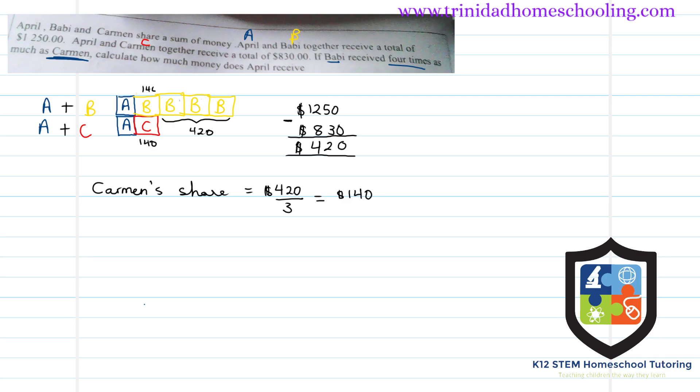You can see that here one of this is equal to Carmen's share. This will give us $140. So Carmen's share is $140. Each one of these shares here is $140.